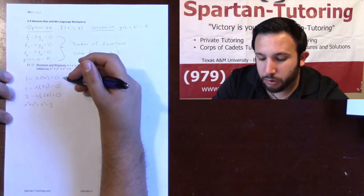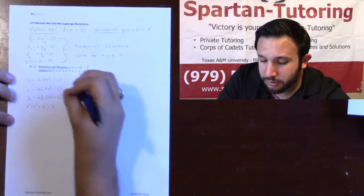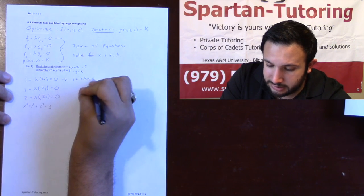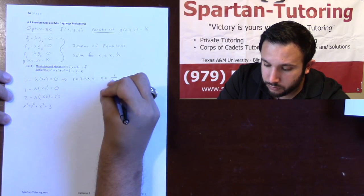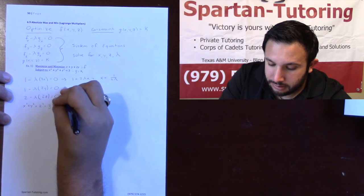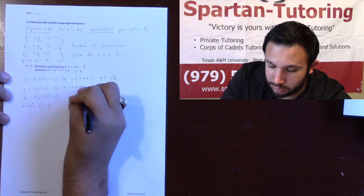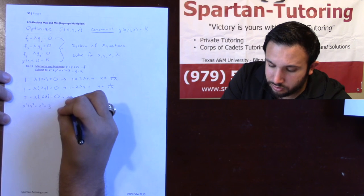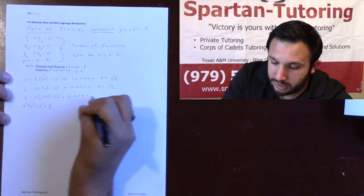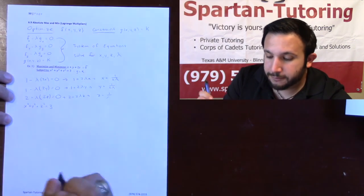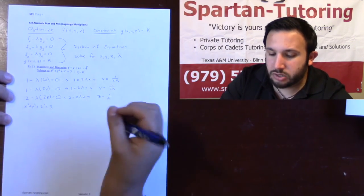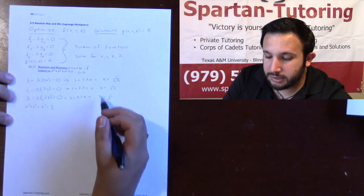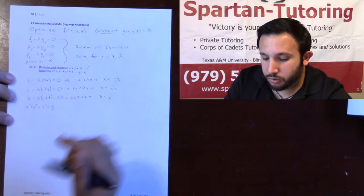As mentioned, ideally we want to put x, y, and z in terms of lambda. From the first equation, 1 = 2λx, so x = 1/(2λ). Likewise, 1 = 2λy, so y = 1/(2λ). And from the z equation, 2 = 2λz, so z = 1/λ. If you can put each variable in terms of lambda, do that, because then you can plug these into the constraint to solve for lambda.